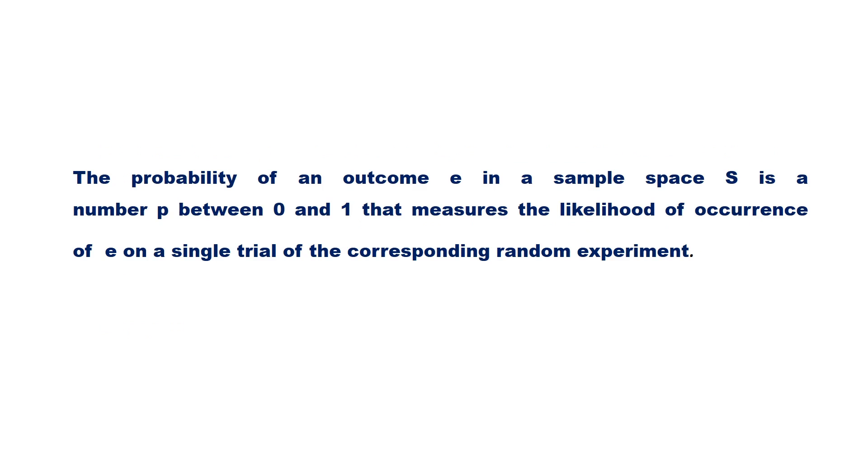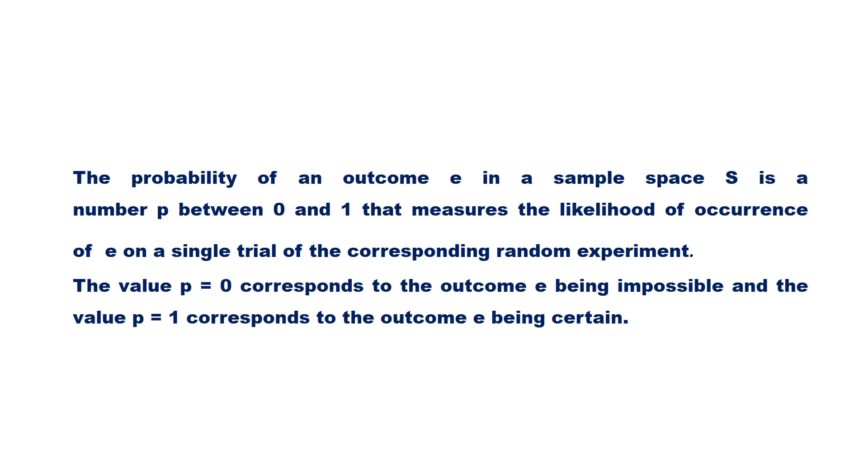The probability of an outcome e in a sample space S is a number p between 0 and 1 that measures the likelihood of occurrence of e on a single trial of the corresponding random experiment. The value p = 0 corresponds to the outcome e being impossible, and the value p = 1 corresponds to the outcome e being certain.